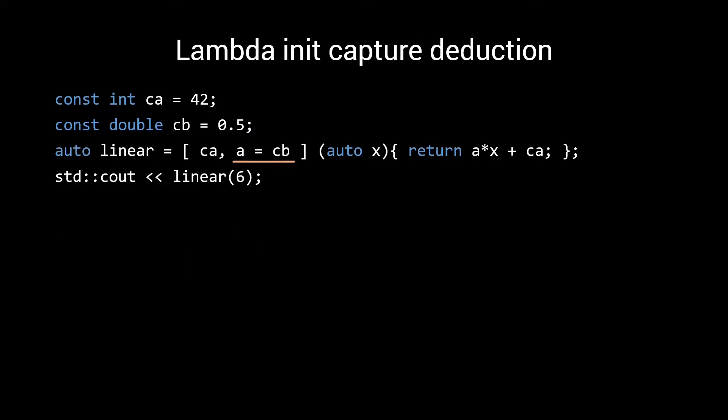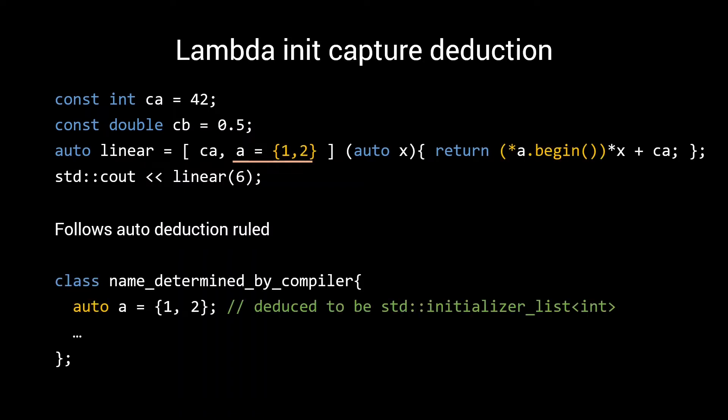Next we have lambda init capture. Init capture rules are the same as those for auto-type deduction, which includes the rules for braced initializer lists. This means that the following is perfectly legal. In this case, the class that the compiler generates for this lambda will contain an A member that is initialized with the braced initializer list, and according to the rules of auto-type deduction this gives us an std initializer list as the deduced type for A.